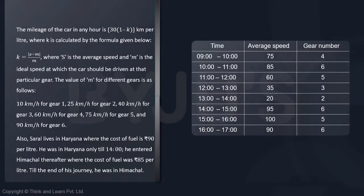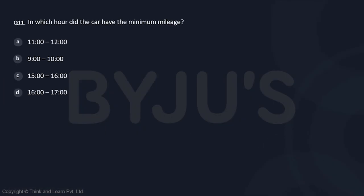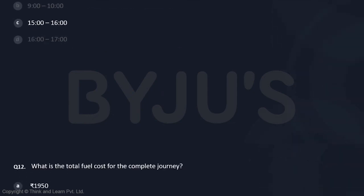Which hour did the car have the minimum mileage? Mileage is minimum in the hour that is the 20 value. So 15 to 16. That is option C, very simple.